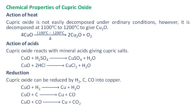Regarding the chemical properties of cupric oxide: under the action of heat, cupric oxide is not easily decomposed under ordinary conditions; however, it is decomposed at 1100 to 1200 degrees Celsius. Under the action of acids, cupric oxide reacts with mineral acids giving cupric salts. Cupric oxide can also be reduced by hydrogen, carbon, or carbon monoxide into copper, as shown in the reaction.